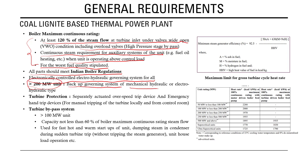An electronically controlled electro-hydraulic governing system is required for all unit types. For units above 200 MW, a backup governing system — either mechanical-hydraulic or electro-hydraulic — is also required. Units above 100 MW must also have a turbine bypass system. The minimum steam generator efficiency and maximum gross turbine cycle heat rate are specified for different unit sizes, covering supercritical, ultra-supercritical, and subcritical units.